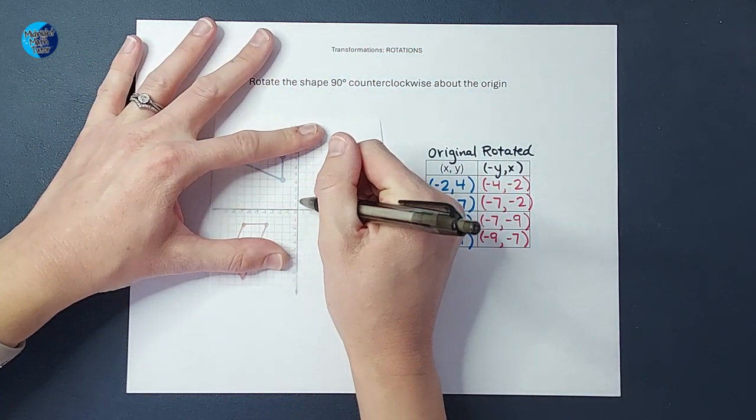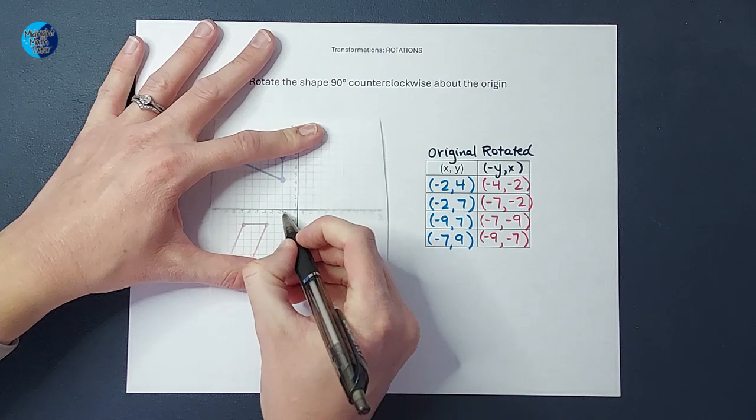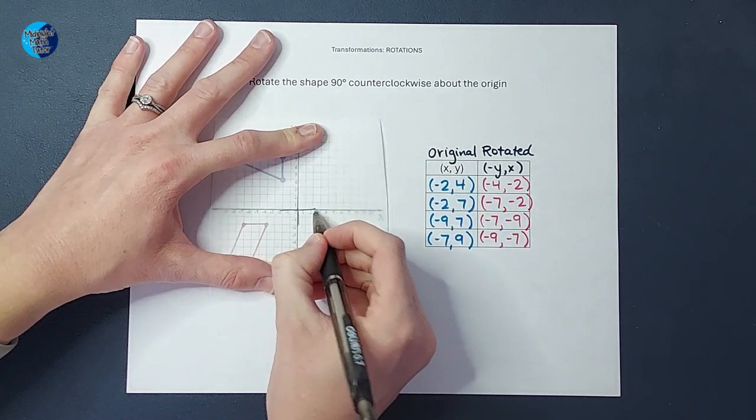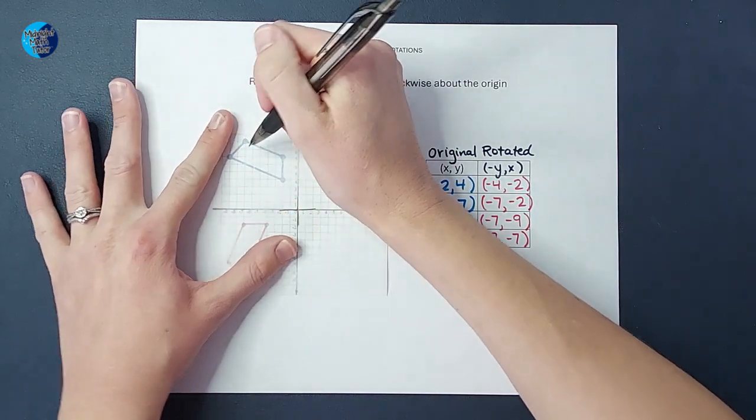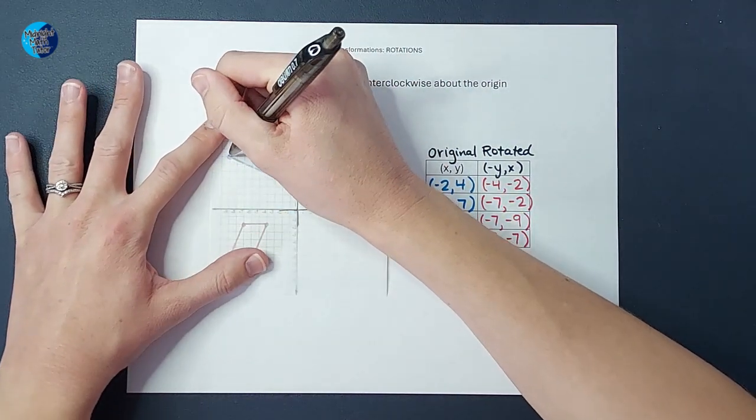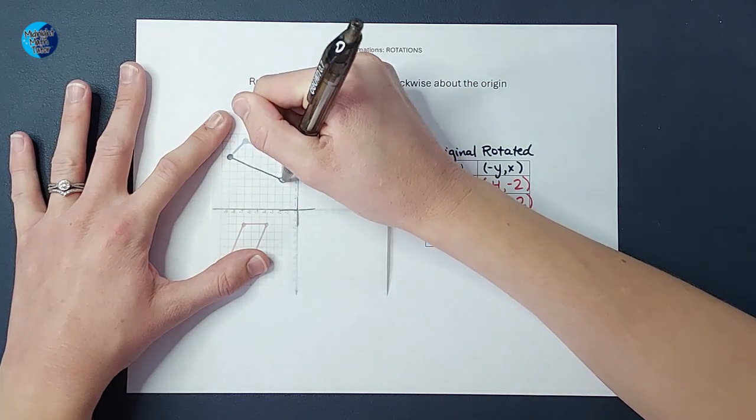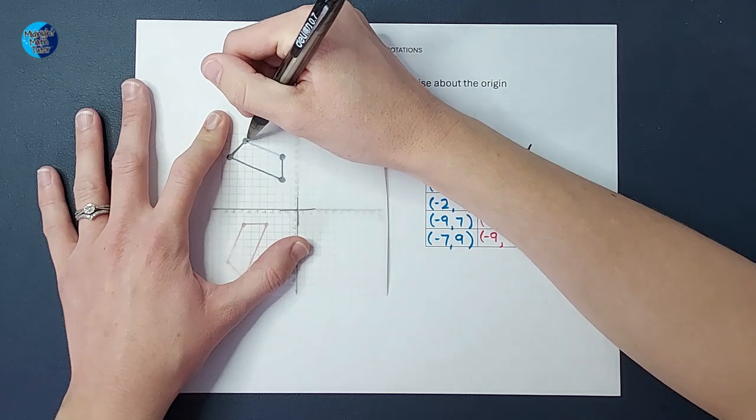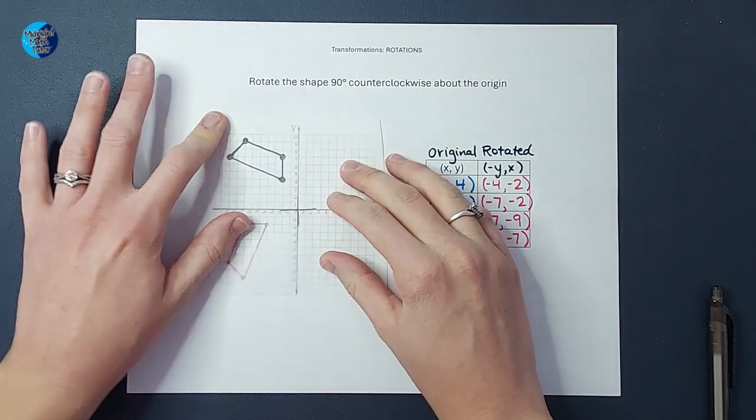The first thing I'm going to do is label my coordinate plane here, so I can tell how far I am rotating it. And then I'm going to trace my original shape here. All right, so there is my original shape.